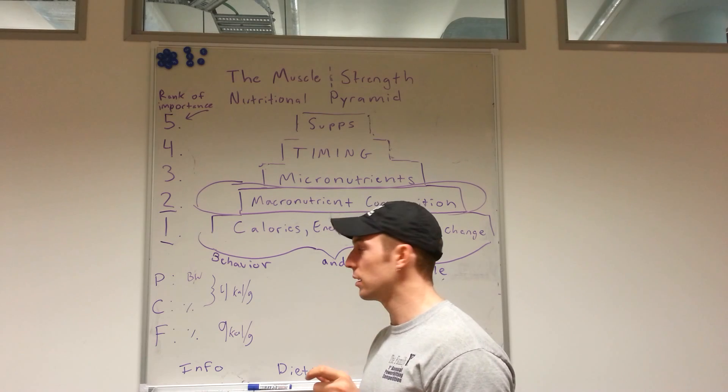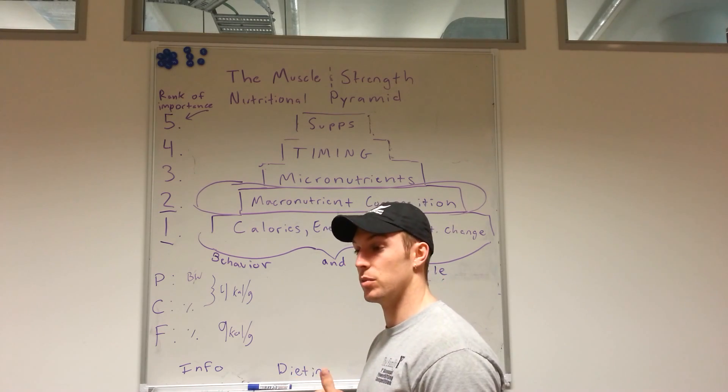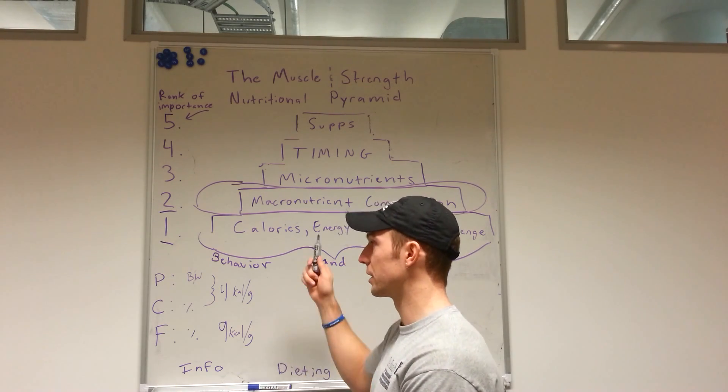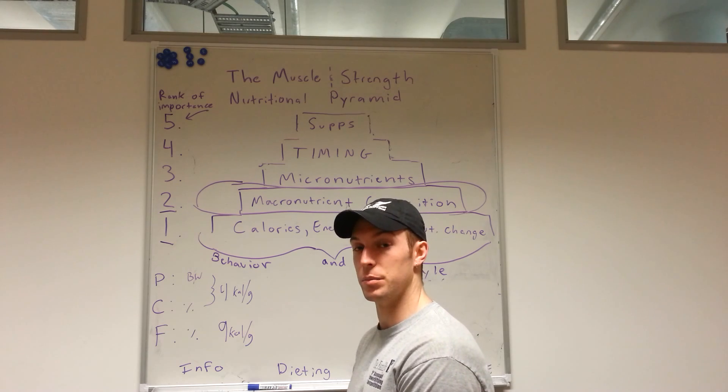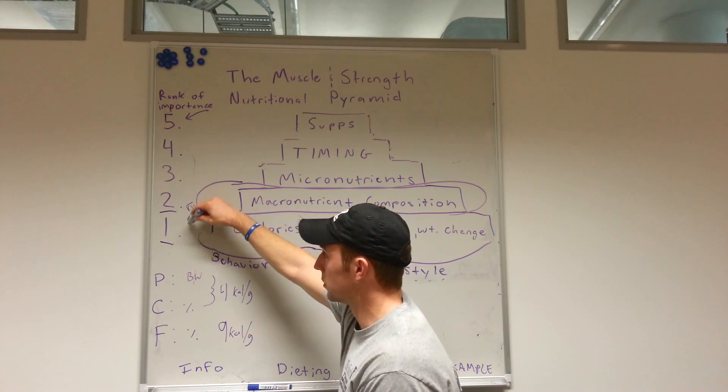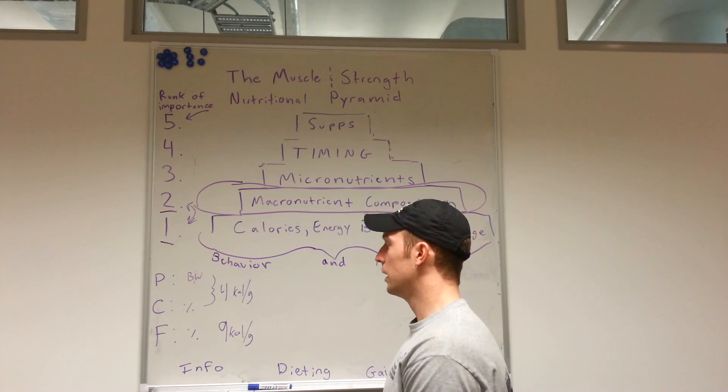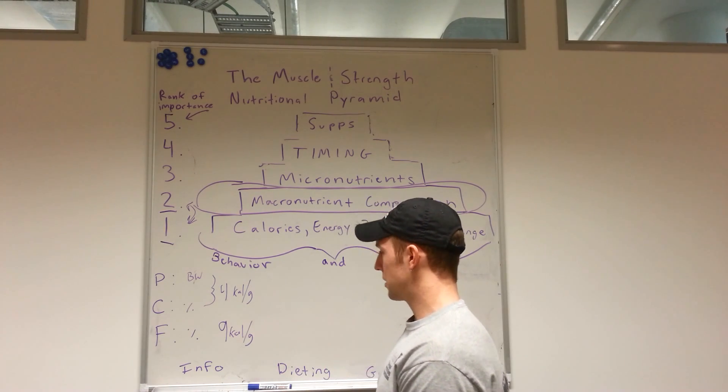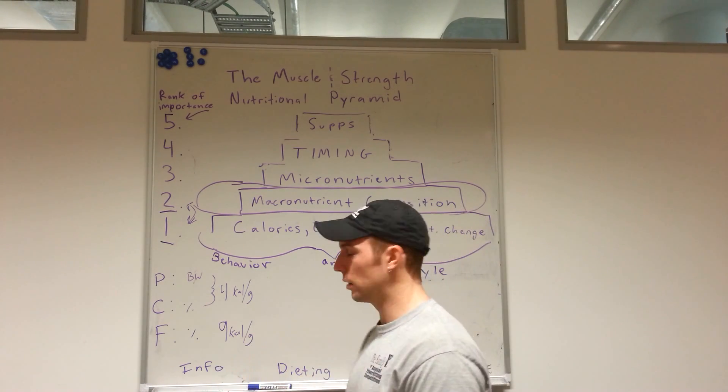For example, someone eating lower than I would recommend in terms of protein but dieting and losing 0.5 to 1 percent of their body weight per week is going to maintain more muscle mass than someone eating what I am recommending for protein but losing 1.5 to 2 percent of their body weight per week. So this still holds true, order of importance.